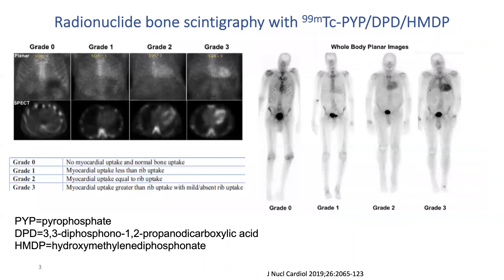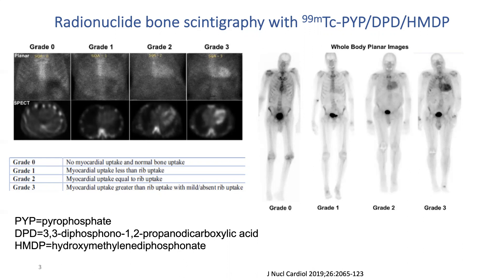In this slide, we can observe the four different grades of the Perugini scale. Grade 0 shows no myocardial uptake and normal bone uptake. Grade 1 shows myocardial uptake less than rib uptake. Grade 2 shows myocardial uptake equal to rib uptake. And finally, Grade 3 shows myocardial uptake greater than rib uptake, with mild or absent rib uptake.